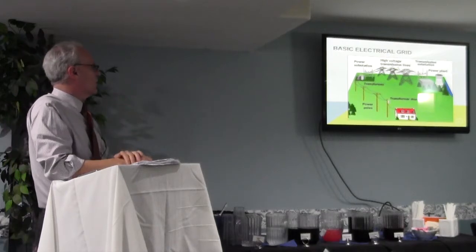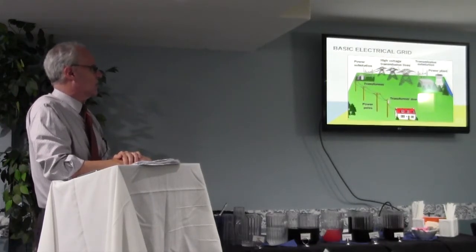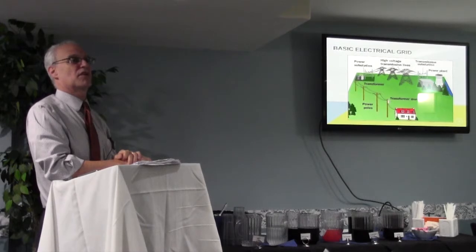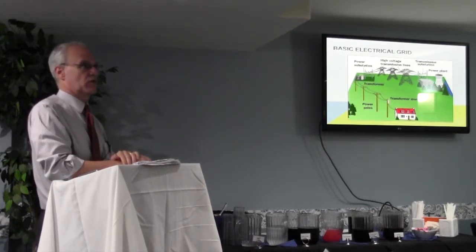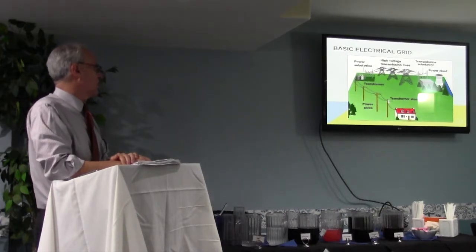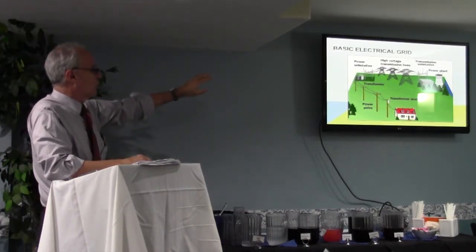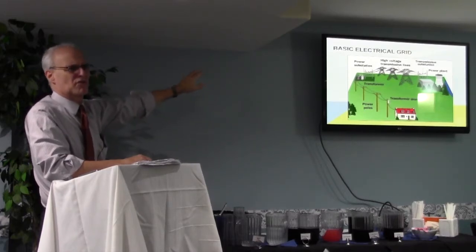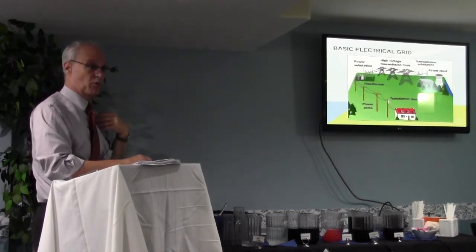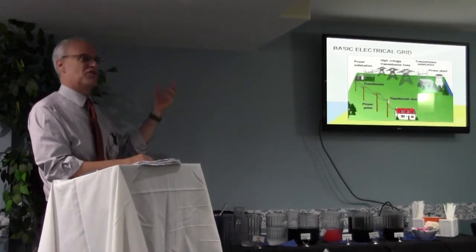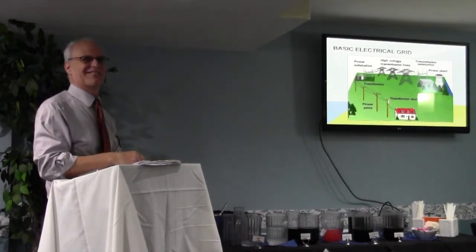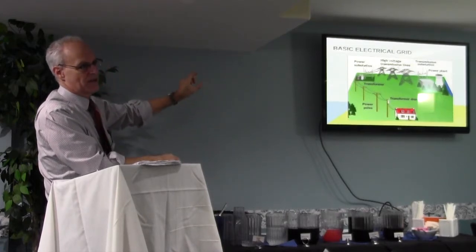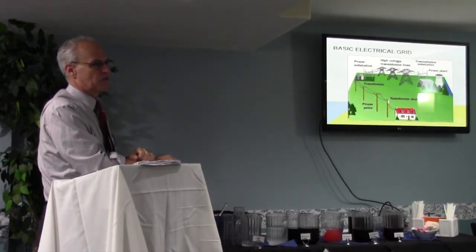With alternating current, you will lose some electricity over the lines, a certain percentage. But they have something called transformers that can up the voltage. Then you put it on a local distribution system. The local system, which is what we're most familiar with, has a transformer that reduces the amount of voltage.